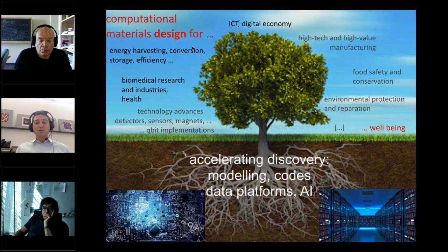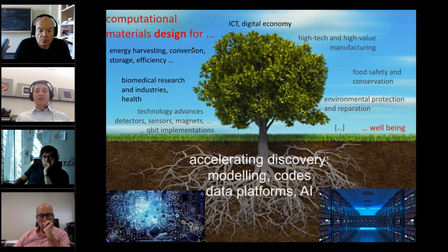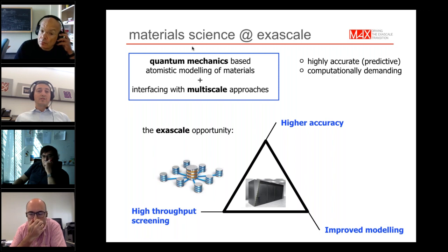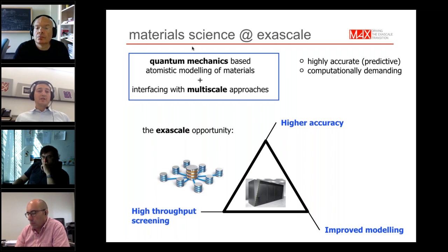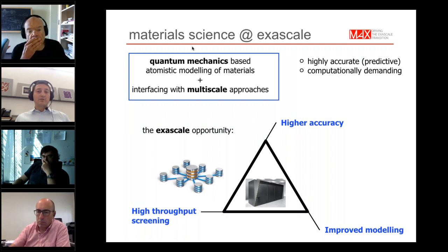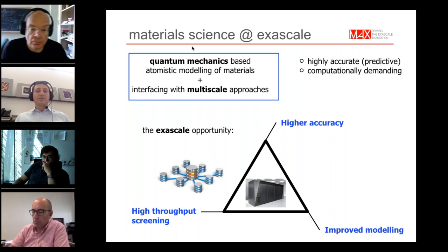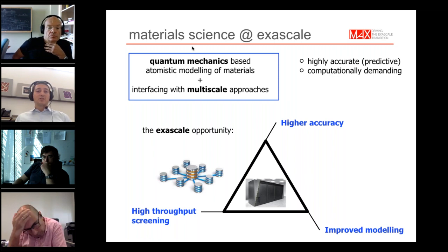Modeling relates to codes, data, and workflows — how data are produced by our codes and can be used, handled, and eventually analyzed up to data analytics. In materials science today we already have enough compute power to use methods directly rooted in quantum mechanical principles, giving us an atomistic first-principles description of materials. These methods are very accurate and also predictive — we don't need material-specific input parameters; we have general parameters and can be truly predictive.